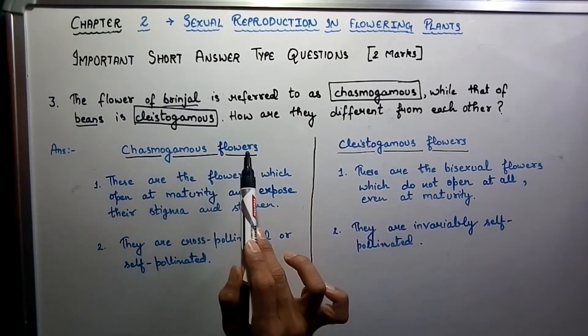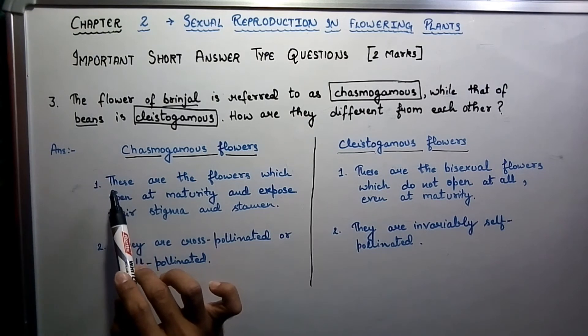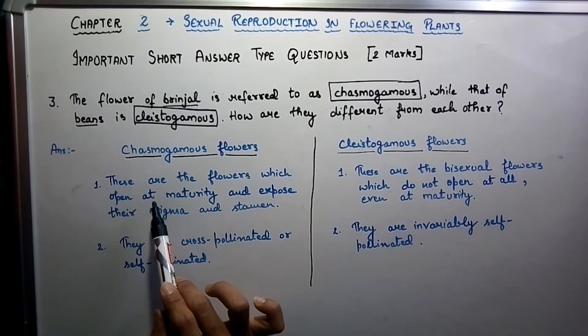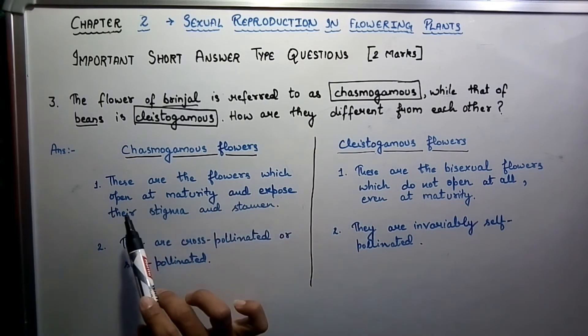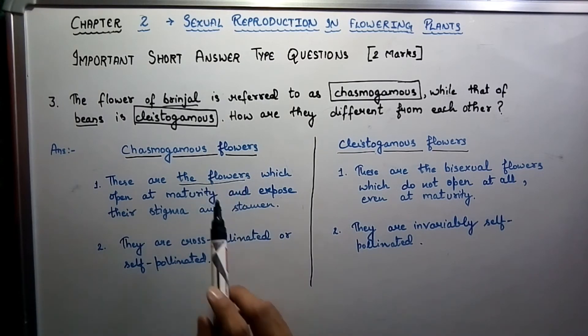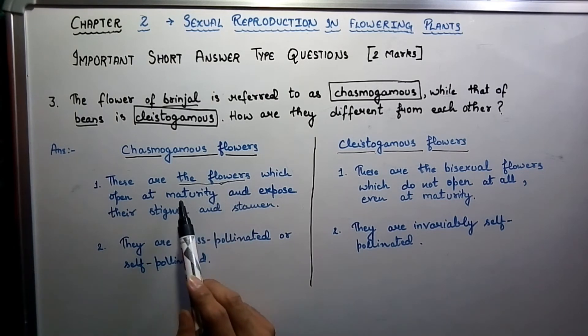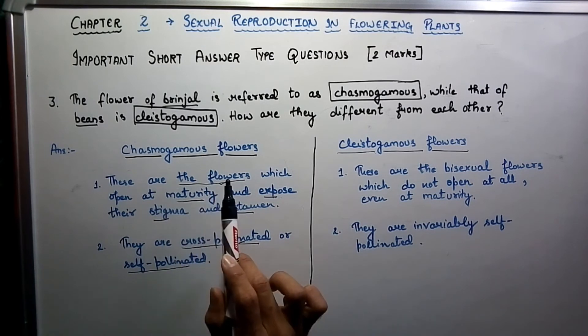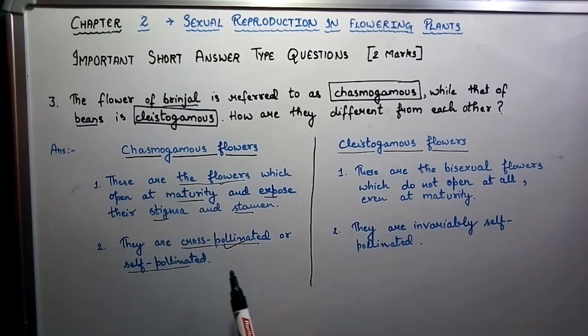First is chasmogamous flowers. These are the flowers which open at maturity and expose their stigma and stamen. During their maturity time these flowers totally open and expose their stigma and stamen to initiate cross pollination and self pollination.